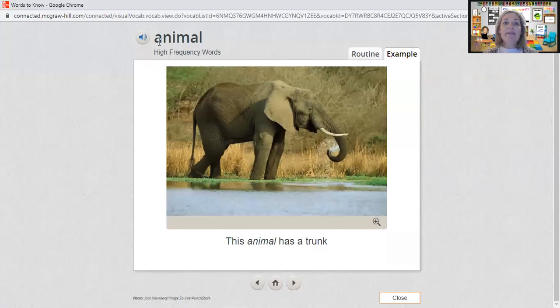The next word is 'animal.' You spell animal A-N-I-M-A-L. This animal has a trunk. This animal is an elephant.